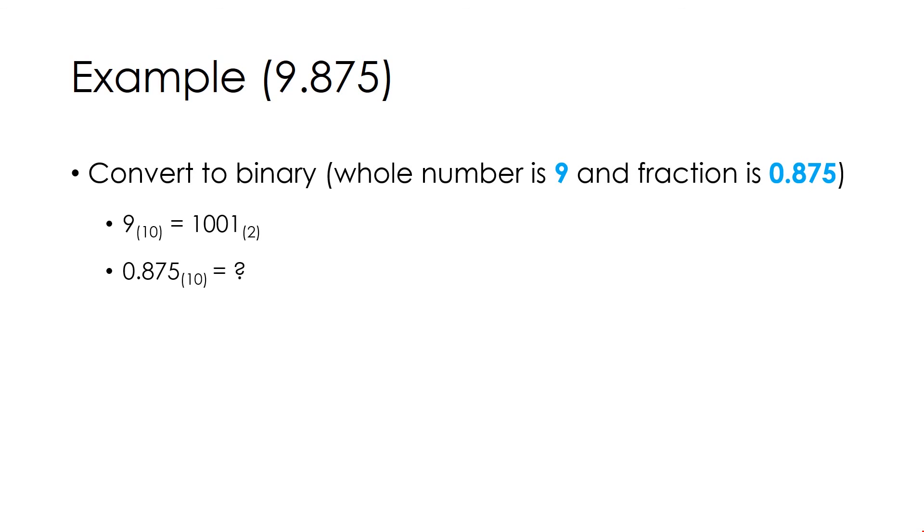How to calculate binary of 0.875? We need to multiply the fraction by 2 until we get fraction 0 in the answer. Multiply 0.875 by 2 and we get 1.750 where fraction is 0.750.